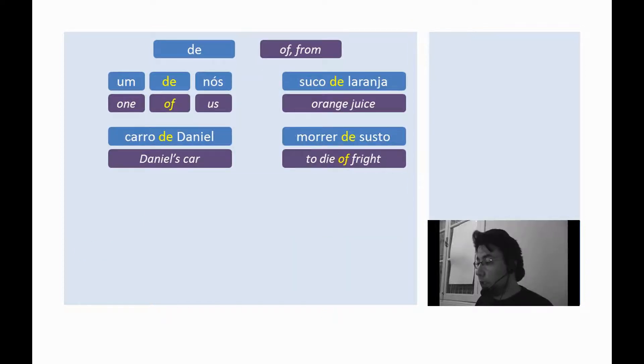Now, the preposition de, usually translated as of or from. The preposition de can express many relations, as inclusion, possession, material, origin, and others. Examples. Um de nós. One of us. Suco de laranja. Orange juice. Carro de Daniel. Daniel's car. Morrer de susto. Should die of fright.